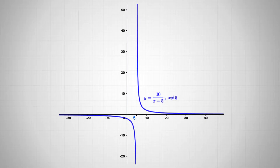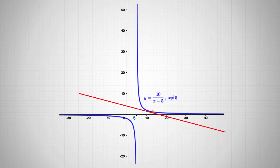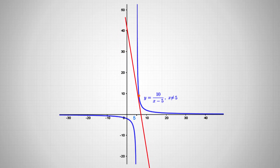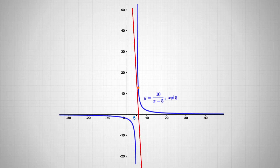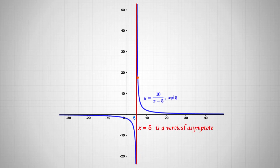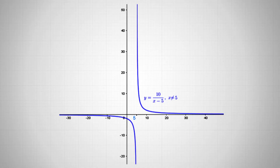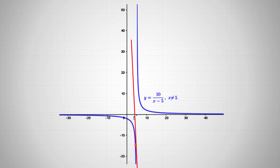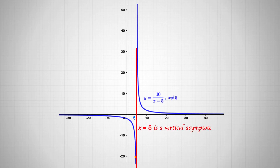As another example, consider the function y = 10/(x−5), where x ≠ 5. We can draw a tangent at each point on the curve when x > 5. As we move closer and closer to x = 5 from the right, these tangents come closer and closer to the line x = 5. Thus x = 5 is a tangent that meets the curve at infinity, so x = 5 is a vertical asymptote. The same applies approaching from the left, so x = 5 is a vertical asymptote both from right and left.